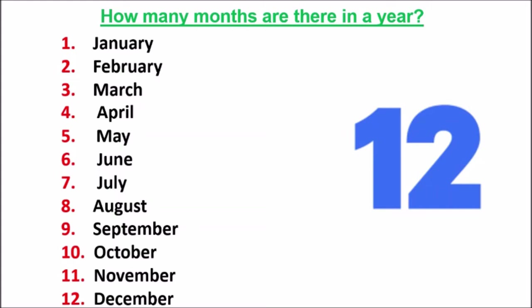So there are 12 months in a year. And children, what is the number written with April? Look carefully. Can you tell me the number? Yes, 4 is written with April, because April is the 4th month. Say again with me: April is the 4th month. And remember this number.